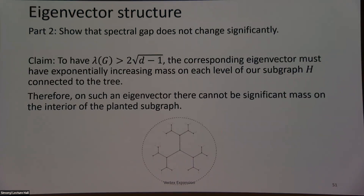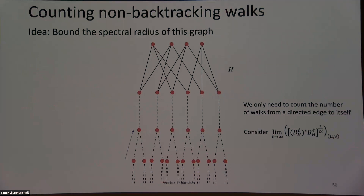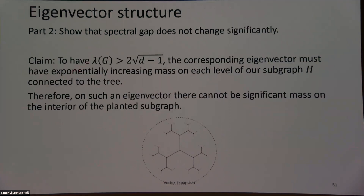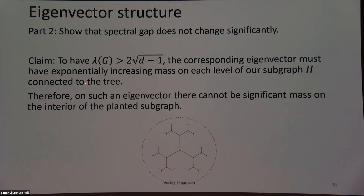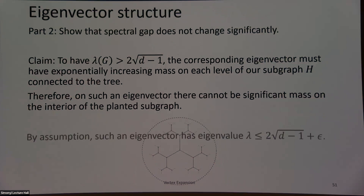The only reason why you can even get approximate Ramanujan is because of the shape of the corresponding eigenvector. The claim is that I know the spectral radius of this gadget is 2√(D−1). So if after surgery I have some eigenvalue of modulus greater than 2√(D−1), then I can't have too much contribution from this graph of low spectral radius. As I leave graph H, I must have exponentially increasing mass on the eigenvector. So on such an eigenvector, there can't be significant mass on H, and by assumption all the other eigenvectors had low spectral radius.